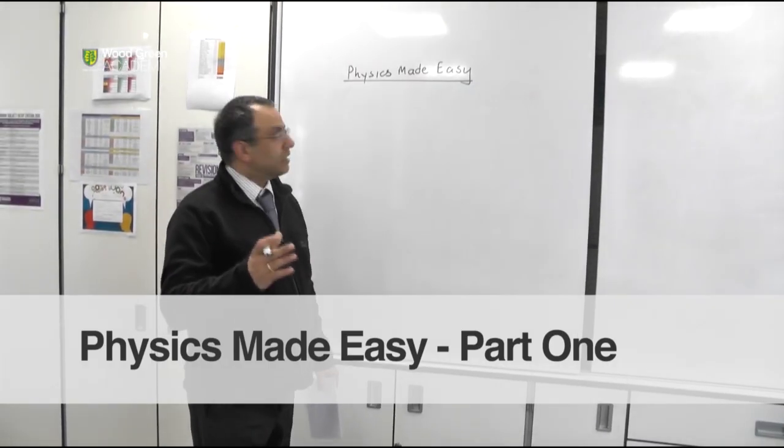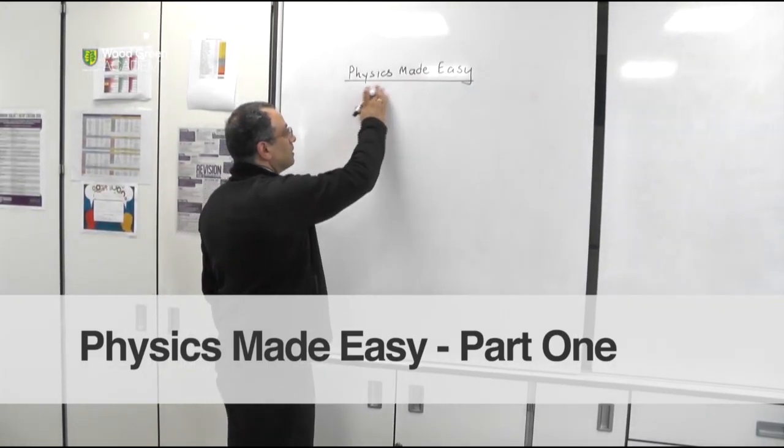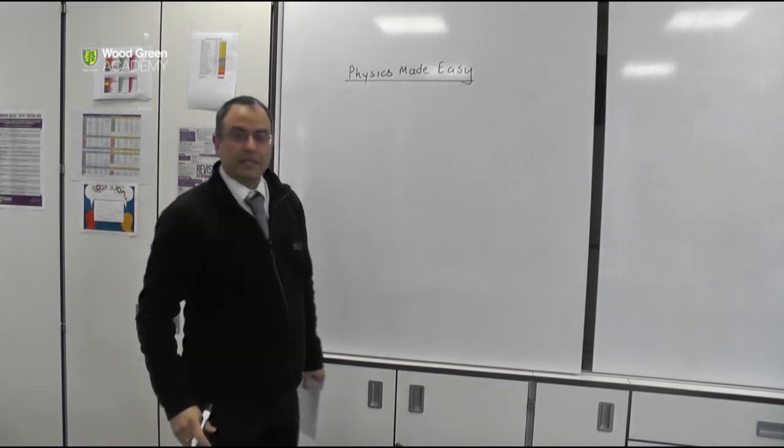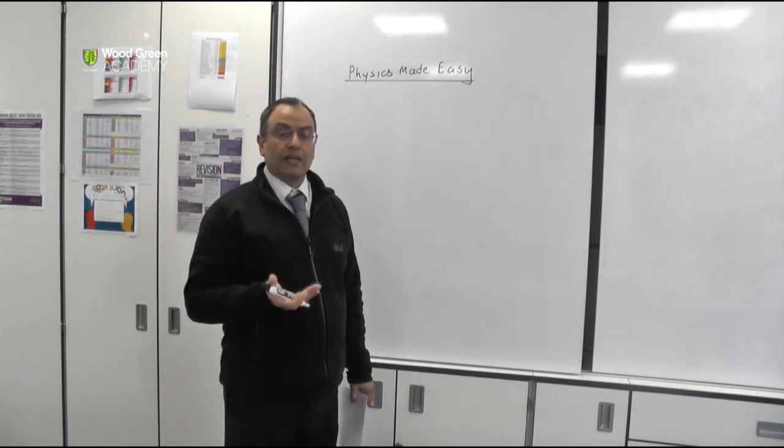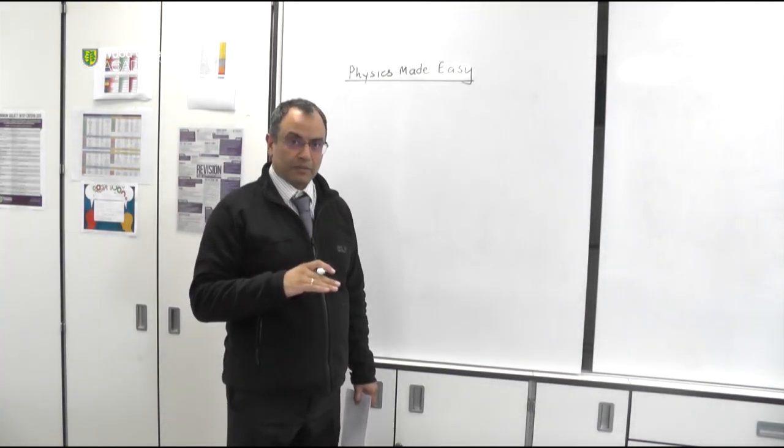The first idea we're looking at in physics made easy is this idea of having a scalar quantity and a vector quantity.